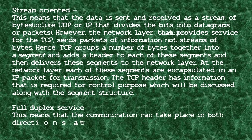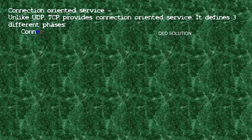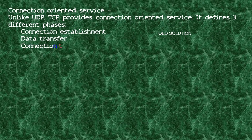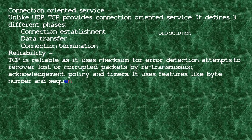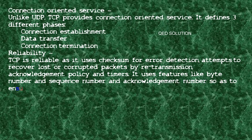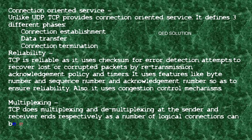Full duplex service: communication can take place in both directions at the same time. Connection-oriented service: unlike UDP, TCP defines three phases — connection establishment, data transfer, and connection termination. Reliability: TCP uses checksum for error detection, retransmission for lost or corrupted packets, acknowledgement policy, and timers. It uses byte number, sequence number, and acknowledgement number to ensure reliability, and also uses congestion control mechanisms.